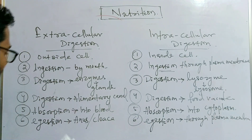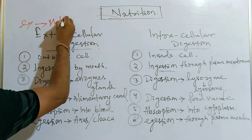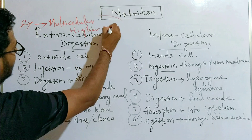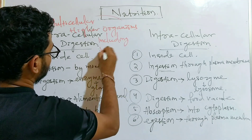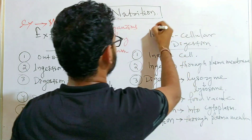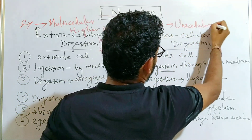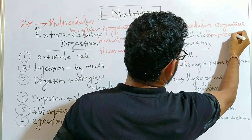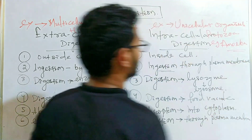Examples of extracellular digestion include multicellular higher organisms, including humans. Examples of intracellular digestion include unicellular primitive organisms like protozoa — for instance, amoeba is a classic example of an organism with intracellular digestion.